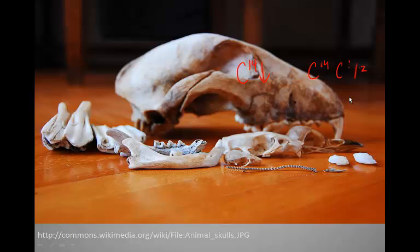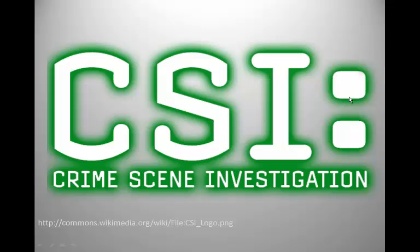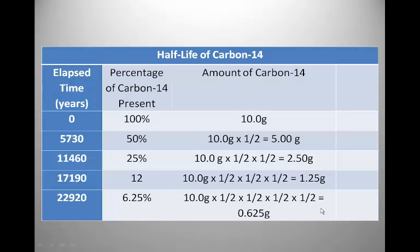This process is called radiocarbon dating. It's useful for dating the age of plants and animals that lived up to 50,000 years ago. It can also be used in more recent specimens and is used in crime scene investigation when remains are found. The half-life of carbon-14 is 5,730 years, meaning that after one half-life, half of the original carbon-14 still exists in the original sample.